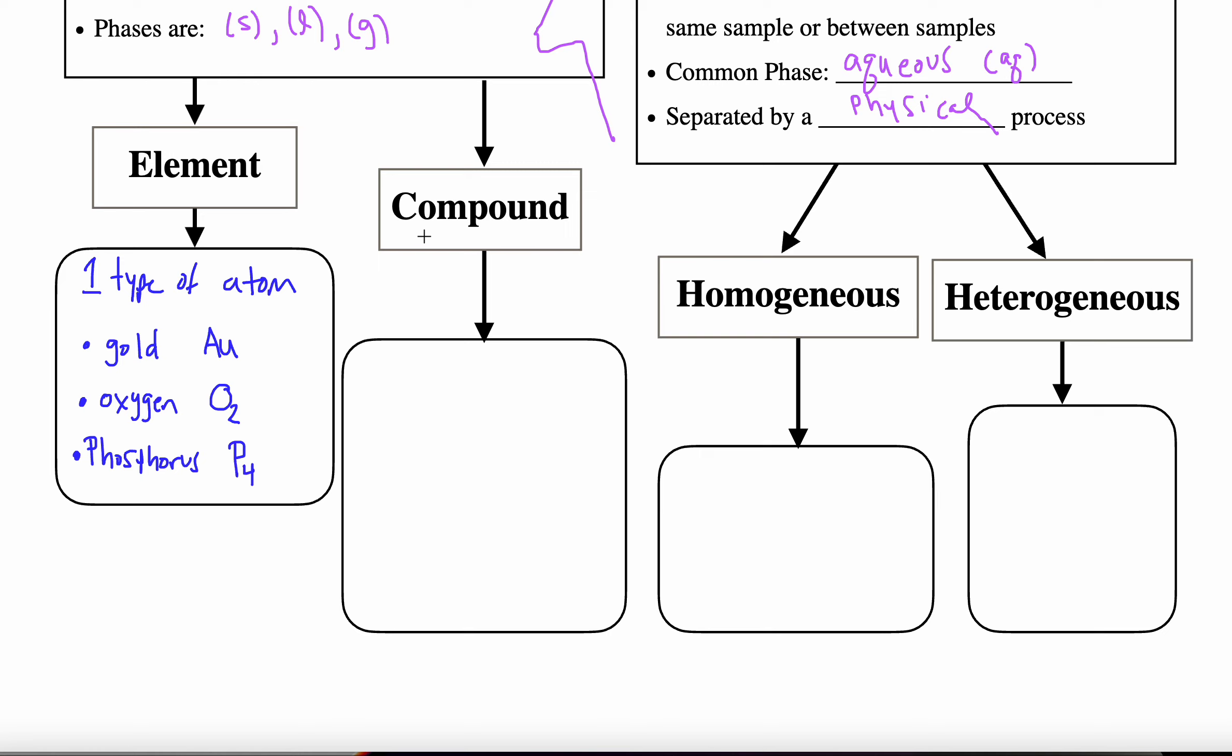Oxygen is made up of two identical oxygen atoms that share a bond. Same thing with the phosphorus. There are four phosphorus atoms present within the particle, and they are four phosphoruses bonded together. A compound, it's made up of one type of particle.